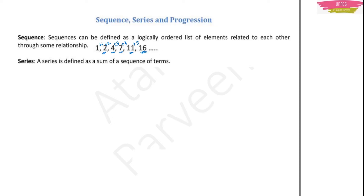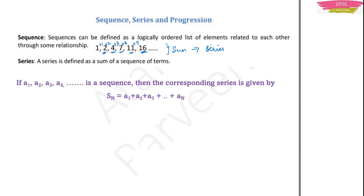I hope you understood what a sequence is. Now, what is a series? Series means it is the sum of the sequence. If a1, a2, a3, a4... is a list that is a sequence, then the corresponding series will be a1 + a2 + a3 + ... + an. Means you are adding those numbers. So this is a sequence, and if you add them, you get the series.